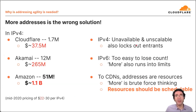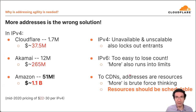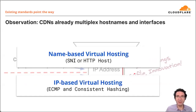Some enabling technologies already take us in the right direction: name-based virtual hosting at higher layers with SNI or HTTP host, and IP-based virtual hosting with ECMP and consistent hashing at lower layers. The design fundamentally returns IP addresses to their original intended purpose of reachability. At higher layers, we re-architect DNS; at lower layers, we re-architect sockets to be programmable. Each of these can be deployed independently, conferring benefits within their respective space.